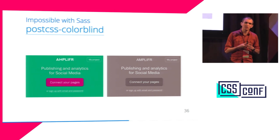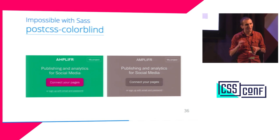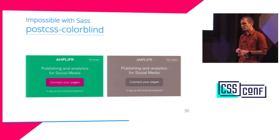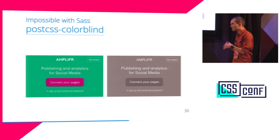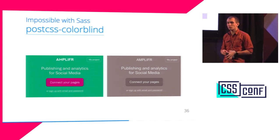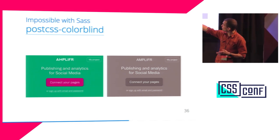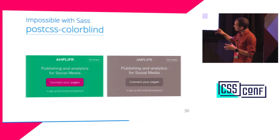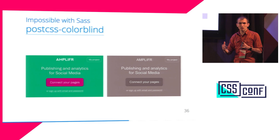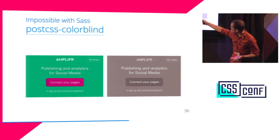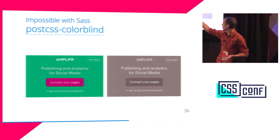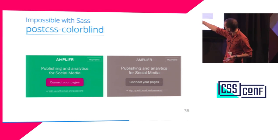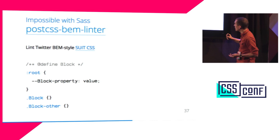We have about 5% colorblind users on our sites — for most of you, that's more than your Internet Explorer users. So if you test your sites with Internet Explorer, you should definitely also test for colorblind users. And this is why Netflix wrote a plugin, PostCSS Colorblind. It takes your CSS and replaces all colors to emulate various types of colorblindness. For example, you can see that a button is very well visible to people who see all colors, but for some colorblindness conditions it will be less visible.